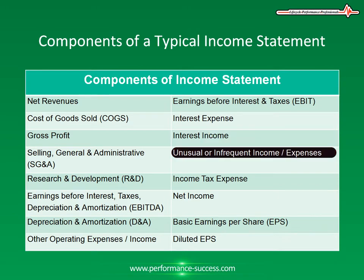Unusual or Infrequent Income and Expenses. This includes gain or loss on sales of assets, disposal of a business segment, impairment charges, write-offs, and restructuring costs.